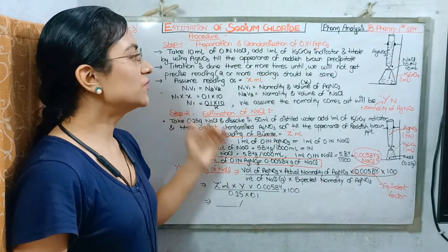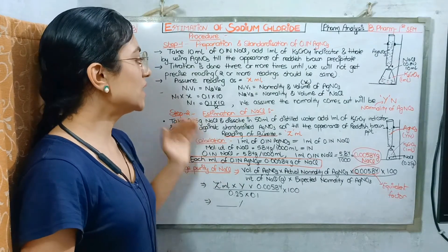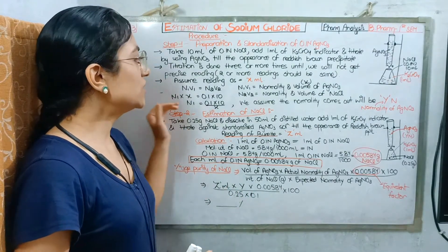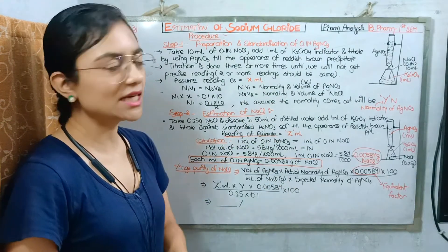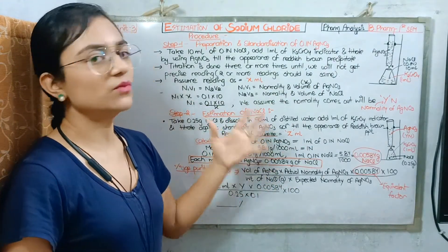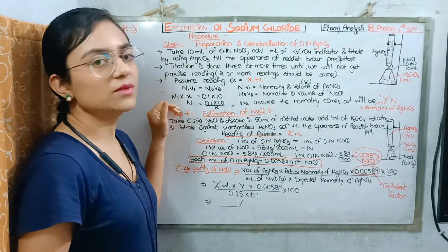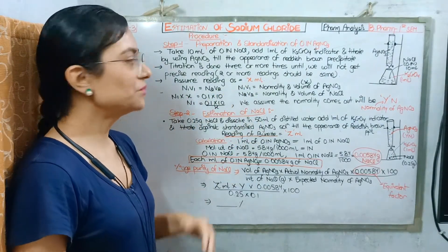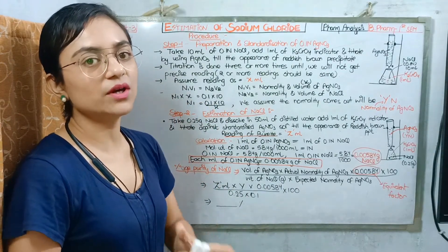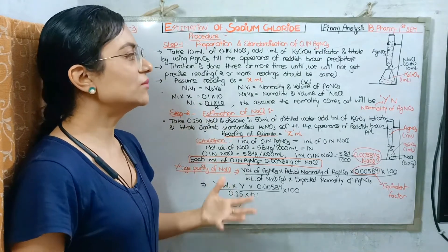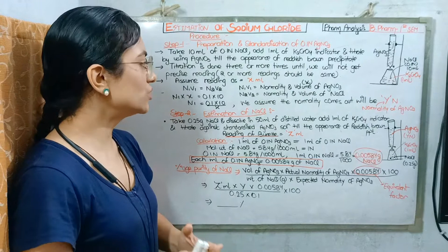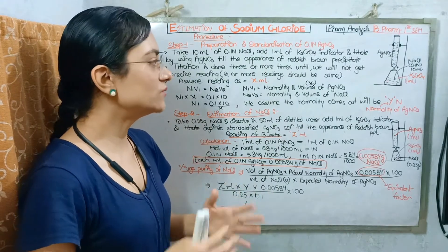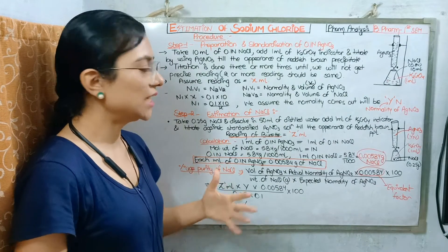After that, we apply the formula N1V1 = N2V2 to find the normality. Here, N1 and V1 are the normality and volume of sodium chloride, and N2 and V2 are the normality and volume of silver nitrate. The volume of silver nitrate is x ml, the normality of sodium chloride is 0.1 N, and the volume of sodium chloride is 10 ml. We then calculate the actual normality of silver nitrate.